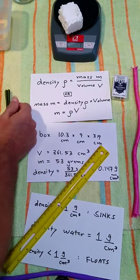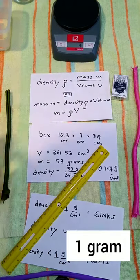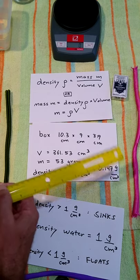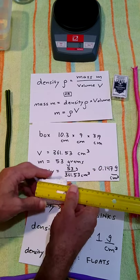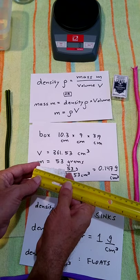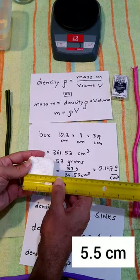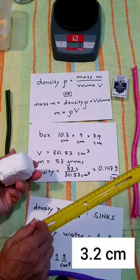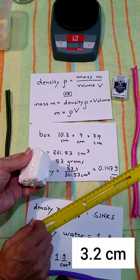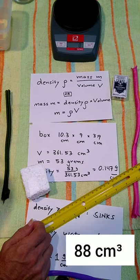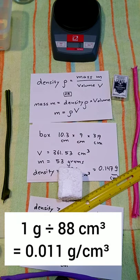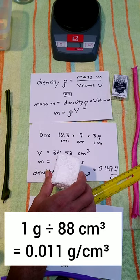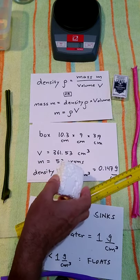I can do this for any object. Here's a 1 gram styrofoam block. The 1 gram styrofoam block is about 5.5 in this direction, 5 in this, and about 3.2 this way. I multiply those out and I get 88 cubic centimeters. Take the 1 and divide by the 88 and I get 0.011 grams per cubic centimeter for the styrofoam.